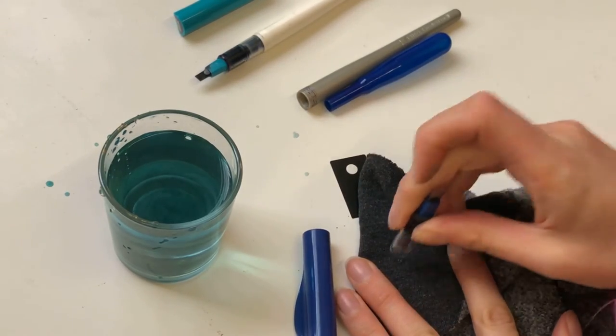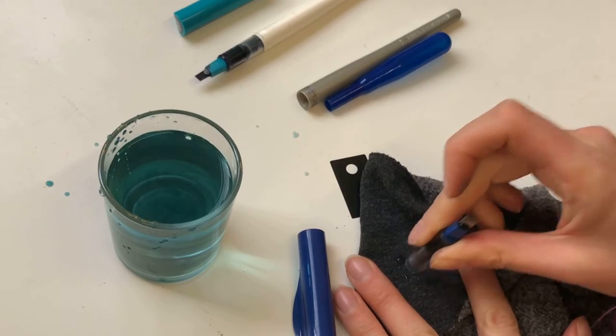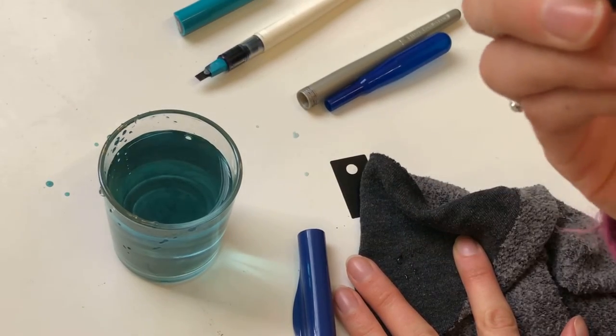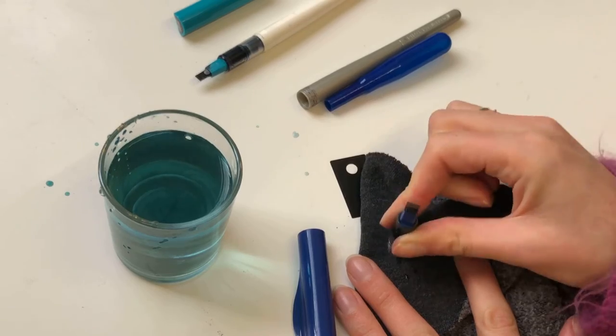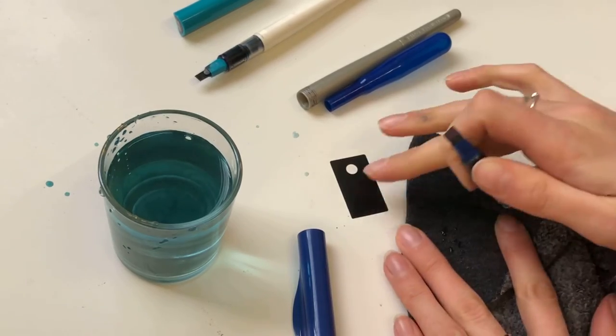I always try and tap it out to get any extra water drops that are stuck inside. Just tap it out which makes the inside of the nib a bit drier.